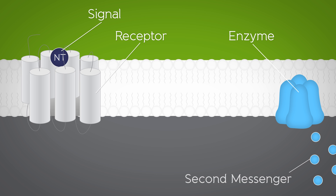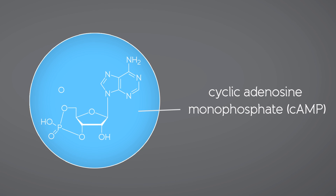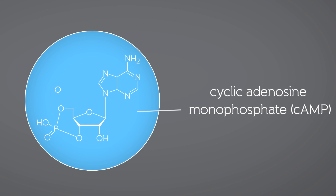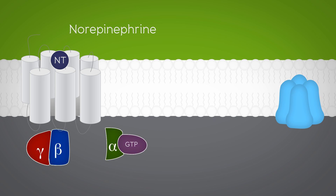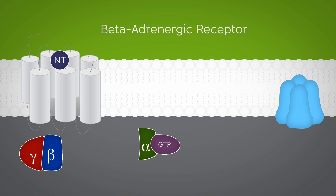An astounding number of second messenger pathways are found in our cells. One example is the cyclic AMP-dependent pathway, which, as in our example with our hungry bear, may be activated by the neurotransmitter norepinephrine. In this case, norepinephrine binds to a specific kind of GPCR called a beta-adrenergic receptor.